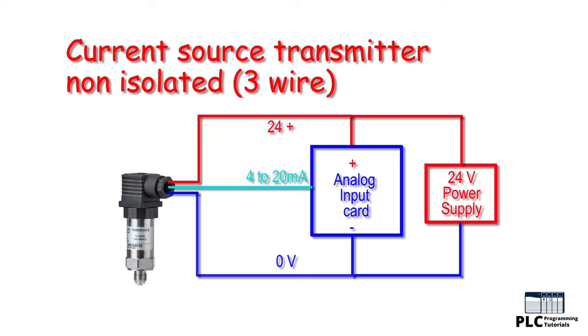The disadvantage for this type of configuration is that any electrical interference may be transmitted along the signal line, which could generate a false alarm in the control panel.